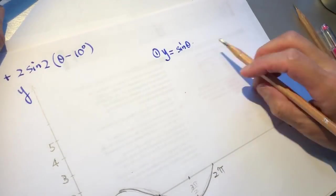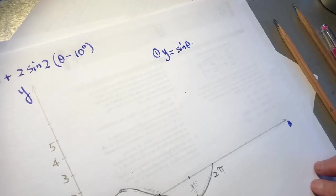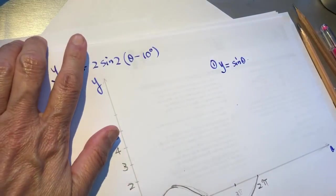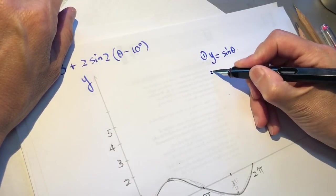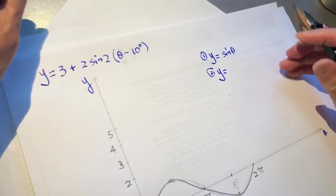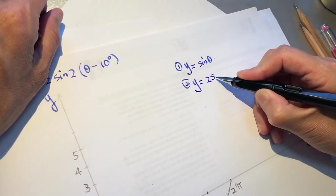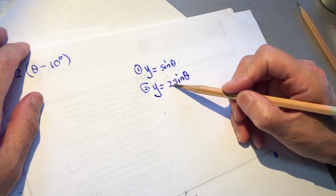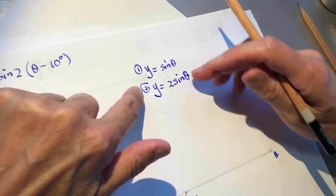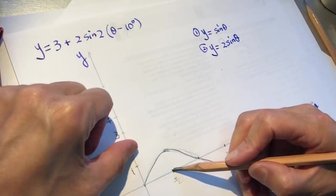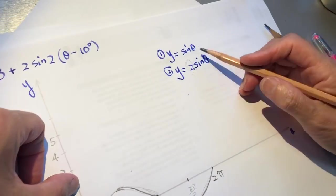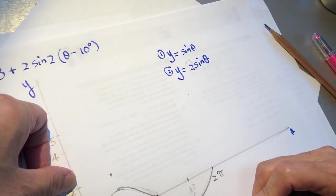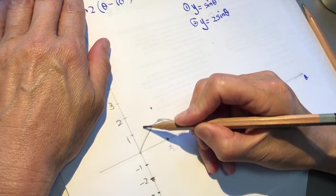Now graph two: y equals 2 sine x. Go one step at a time — there are people who can see ten steps ahead, I am not one of them. The coefficient two means you multiply the previous y-values by two. So where y was one it's now two, and zero stays zero. This is the second graph.